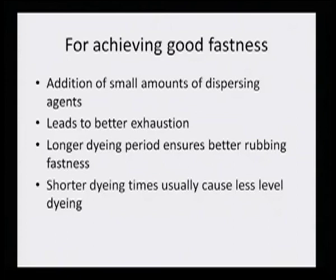Longer dyeing period ensures better rub fastness because rubbing fastness failure comes from undissolved dye just attaching to the surface of the fabric — that undissolved dye comes onto the fingers when we rub the fabric. If most of the dye goes into the dissolution state with the help of the dispersing agent, it creates less amount of dye on the surface and automatically reduces rubbing fastness failure. Shorter dyeing period usually causes less level dyeing, because somewhere the dye would have penetrated deeper showing a darker spot, and somewhere less, so the fabric will not show evenness.